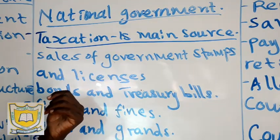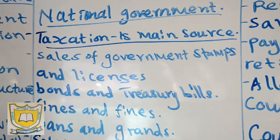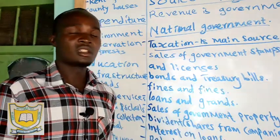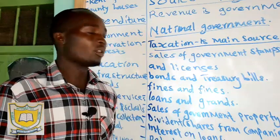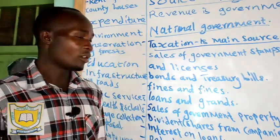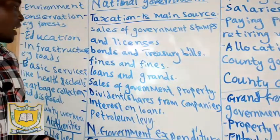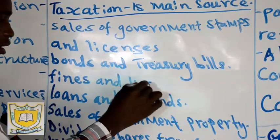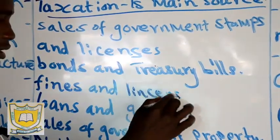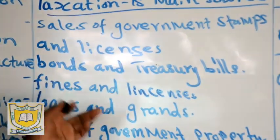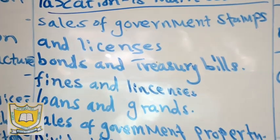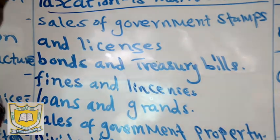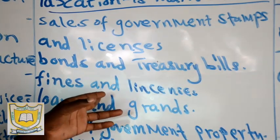Then we have bonds and treasury bills. Bonds relate to cases where people proceed with a case on bond. Treasury bills are also issued to the people so that those people pay some money to the government. Then we have fines — fines are charged in court where somebody has committed a crime. When you are charged and found guilty, you may be given a fine depending on the mistake you have done.